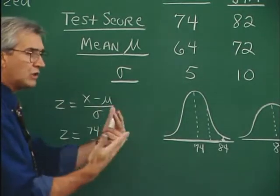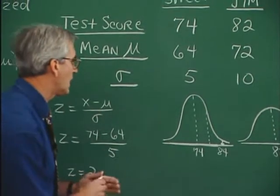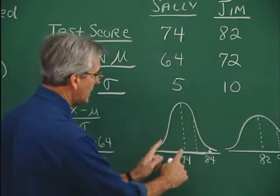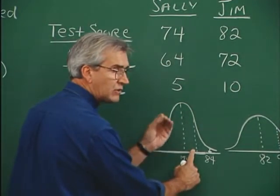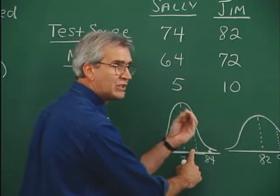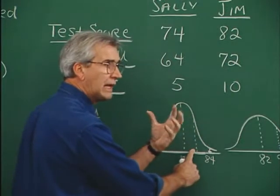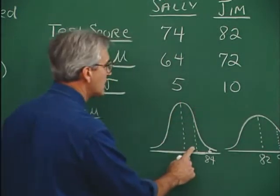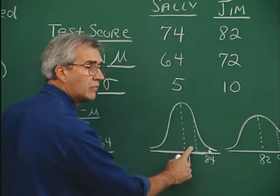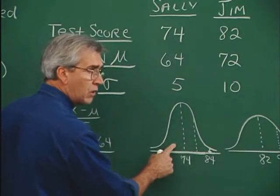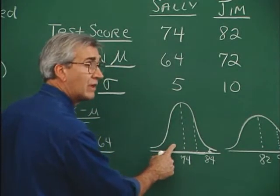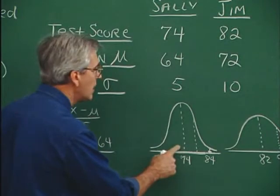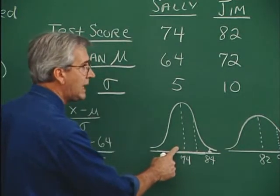If a raw score lies to the right of the mean, the z-score — the distance in terms of numbers of standard deviations — is going to be positive. If the raw score lies to the left of or is less than the mean, then the z-score is going to be negative.